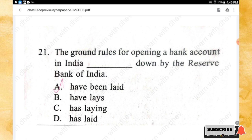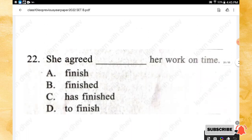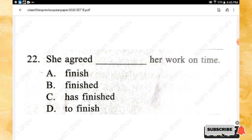Question 22: She agreed _____ her work on time. Options: finish, finished, has finished, to finish. The right answer is — to finish.